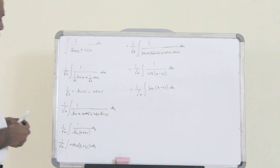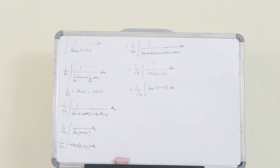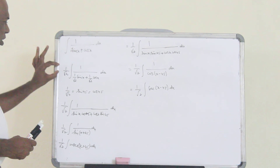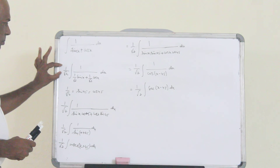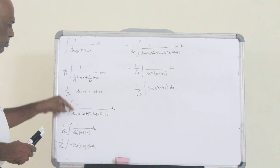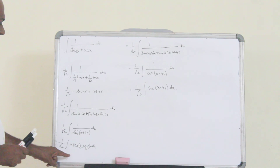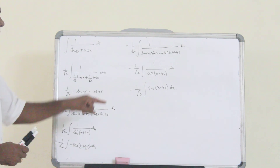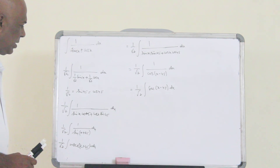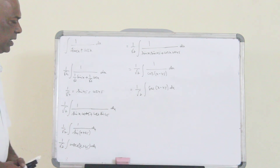This sum can only be done by this method. You must keep this in mind: for this type of sum, you need to multiply and divide by 1 by root 2, then proceed with the trigonometric identity. Then you will get one of the standard integral formats, and then you can integrate.